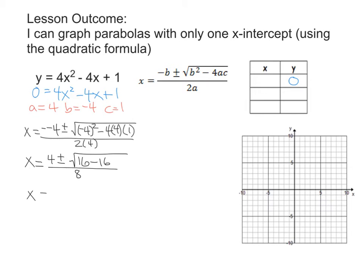Now we get x equals 4 plus or minus — we'll simplify inside the root. 16 minus 16 is 0, all over 8, which means we get x equals 4 plus or minus 0, over 8.